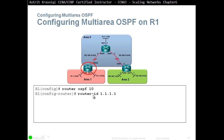So in this case we say 'router-id 1.1.1.1'. If we didn't do this, the second option is to find the highest loopback address and use that as the router ID. Or if there's no loopback configured, it will pick the highest physical IP address as the router ID. If you don't have a physical address configured, then OSPF will not be enabled — you cannot enable that process.